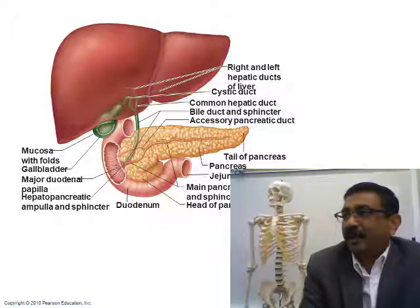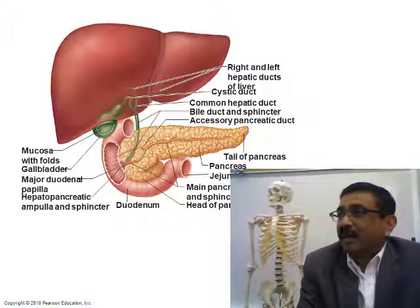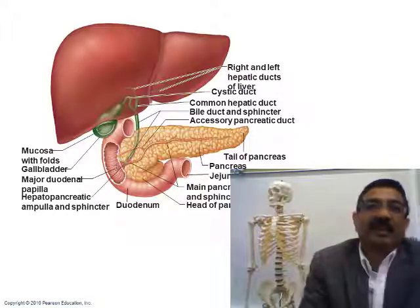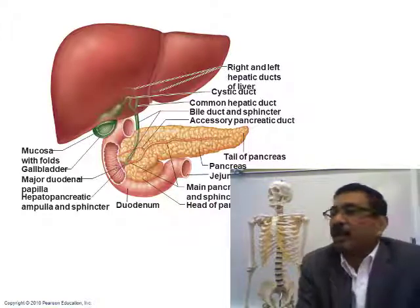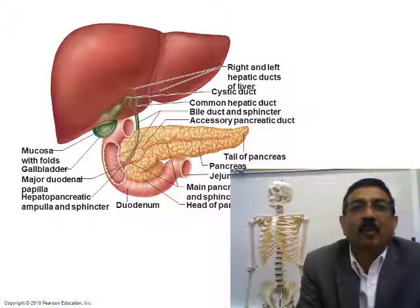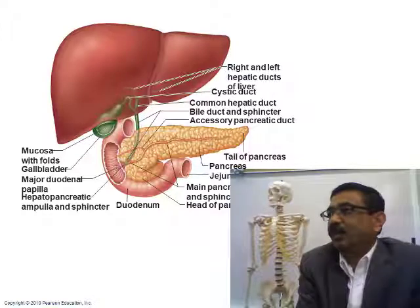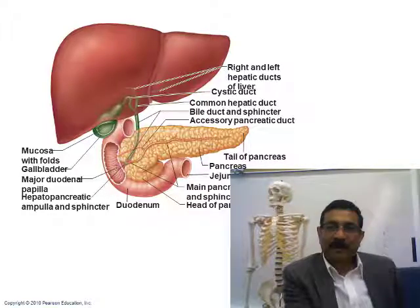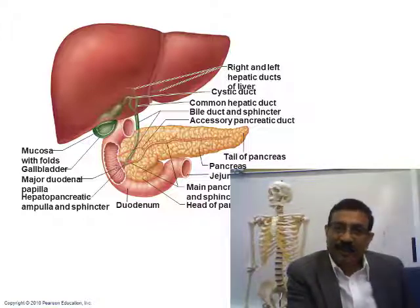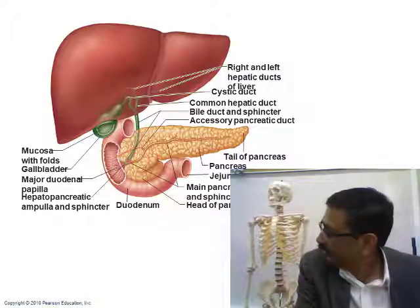The gallbladder stores and concentrates the bile. It concentrates bile by absorbing water out of it. So bile stored in the gallbladder is much more concentrated than bile directly from the liver. The cystic duct and common hepatic duct join to form the bile duct.